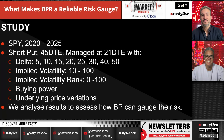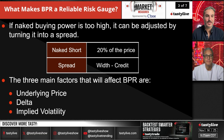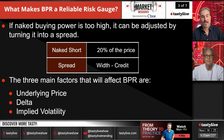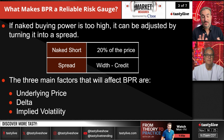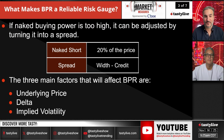If naked buying power is too high, it can be adjusted by turning the position into a spread. As mentioned, when you're naked a put you typically use around 20% of the notional value. If you want to reduce risk, just spread off the trade. This is also applicable to account type — in a cash or IRA account it probably makes sense to always buy the put, whether it's a 1-delta or 2-delta put, or based on value, maybe paying only 10 cents per naked position, just to get some buying power relief.